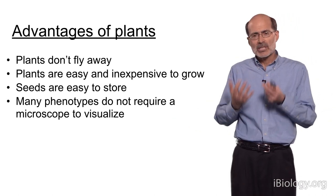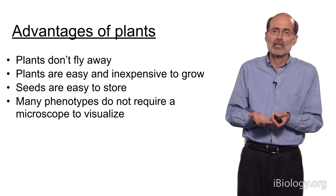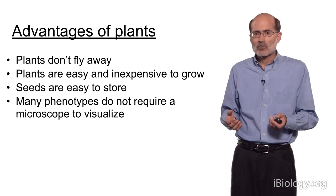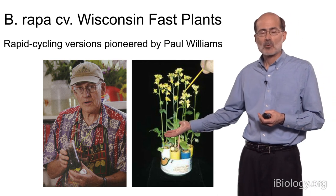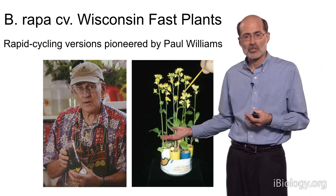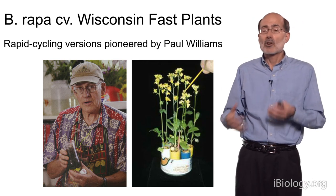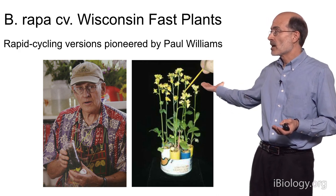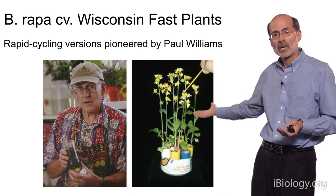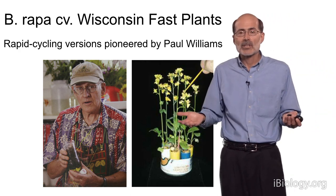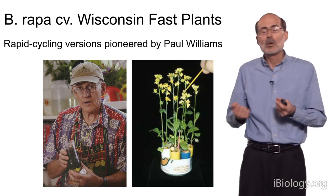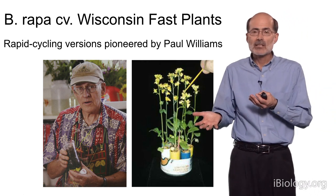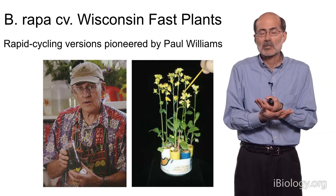I wanted to talk about the particular type of plant that we've been developing for classroom models, and that particular plant is Brassica rapa. Brassica rapa, as a model for classrooms, was first introduced by Paul Williams, who bred very rapid cycling versions of Brassica rapa. These are plants that go from seed to seed in about eight weeks or so. As a scale here, you can see the fingers of someone pollinating these plants with a toothpick — how small they are. They're flowering within a week or so of planting.